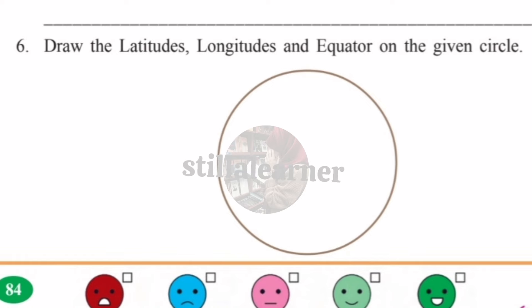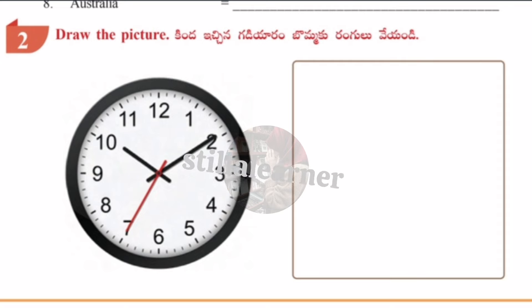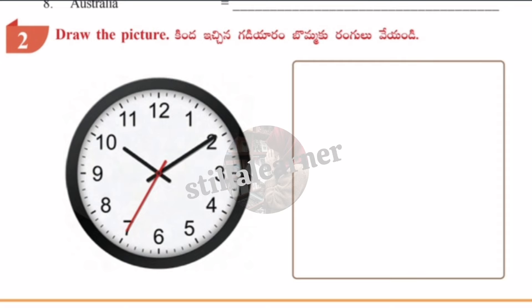Roman numeral two of Worksheet 5: a clock is given, and you need to draw the same picture in the box provided. Draw the clock exactly as shown.